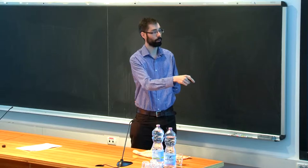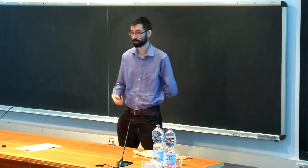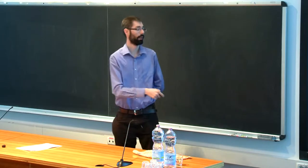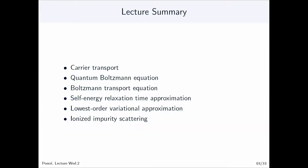This can be used for semiconductors and for metals. In the specific case of metals, we can do a further approximation and go to the lowest order variational approximation to compute, for example, resistivity. And finally I will briefly talk about how to deal with ionized impurity.